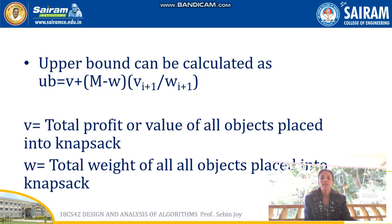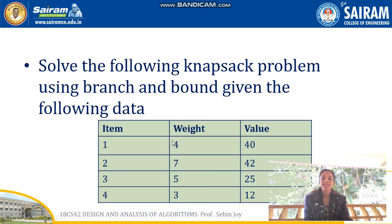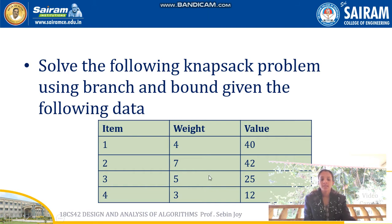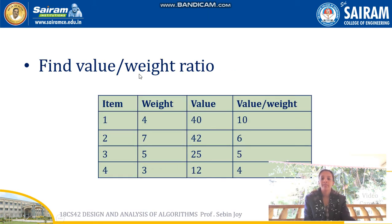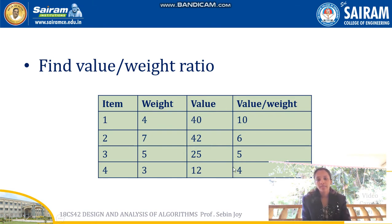Let's take an example. The knapsack problem is given with four items, each having different weights and values. The first step is to find the value-by-weight ratio for each item: 40/4 = 10, 42/7 = 6, 25/5 = 5, and 12/3 = 4. We must calculate these value-by-weight ratios as the first step.